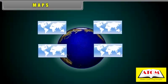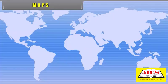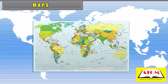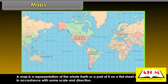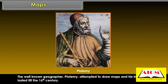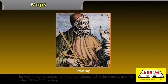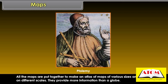Maps. The distribution of various phenomena or features on the earth are usually represented on maps, which show the whole world or a part of it. A map is a representation of the whole earth or a part of it on a flat sheet of paper in accordance with some scale and direction. The well-known geographer Ptolemy attempted to draw maps and his influence lasted till the 16th century. All the maps are put together to make an atlas of maps of various sizes and drawn on different scales.